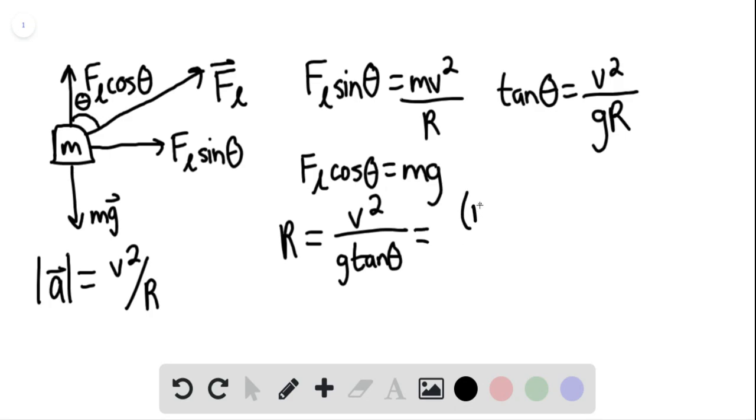This equals (133 m/s)² divided by (9.8 m/s²) multiplied by tan(40°).